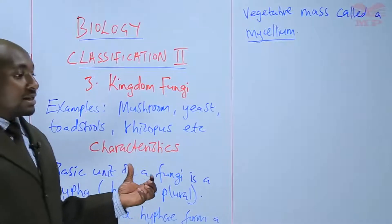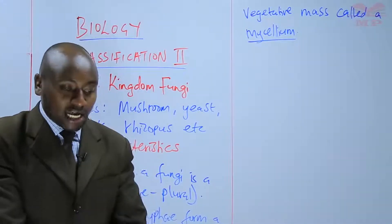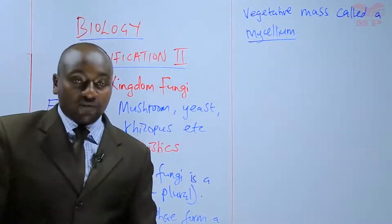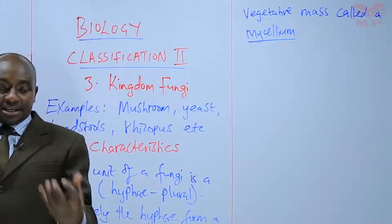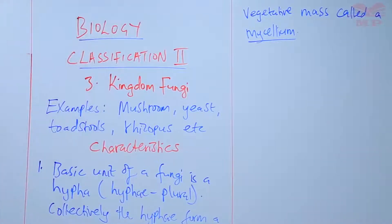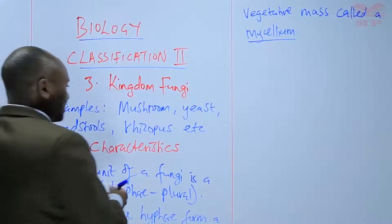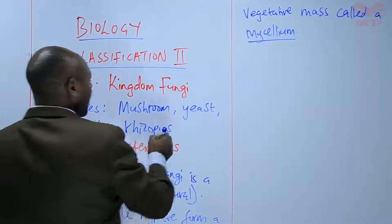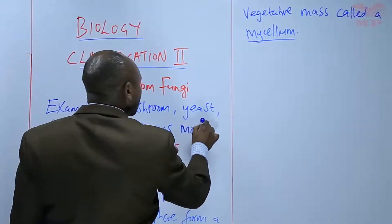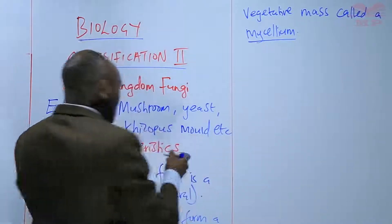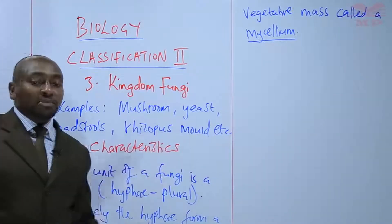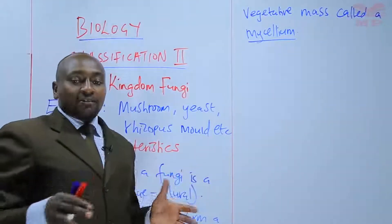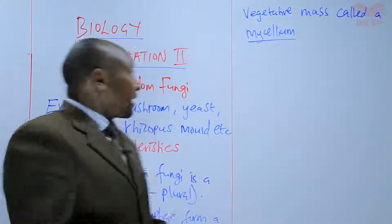There are those hyphae that grow downwards into the substrate and those that grow on the surface. For example, if it is bread — those molds that grow on bread. Another example of Kingdom Fungi is the Rhizopus mold, which is a type of mold, for example the bread mold — the mold that grows on the surface of bread when it becomes stale.